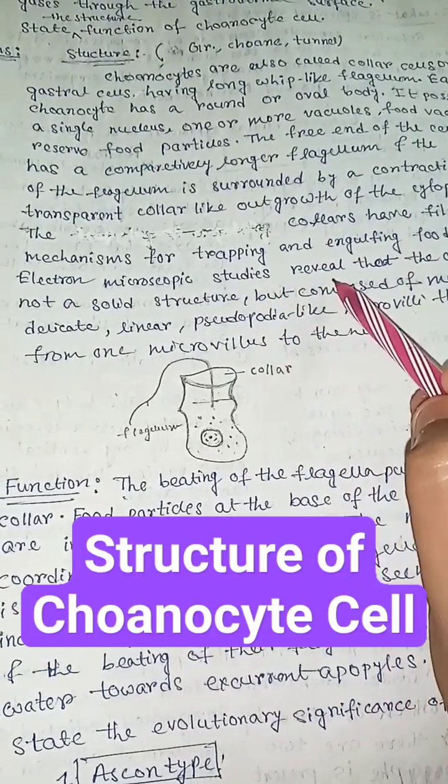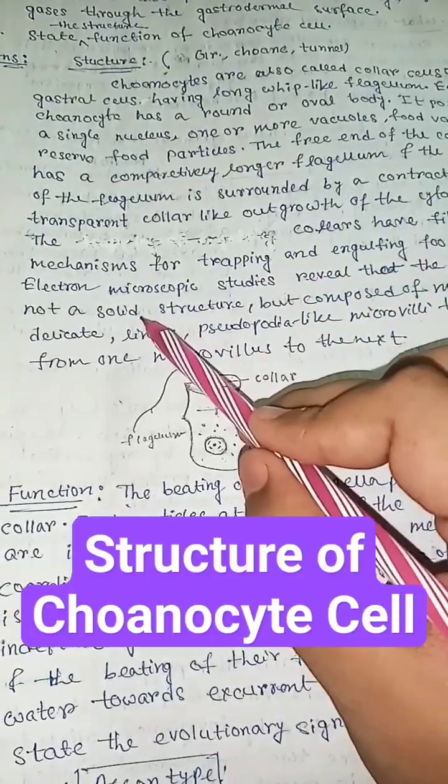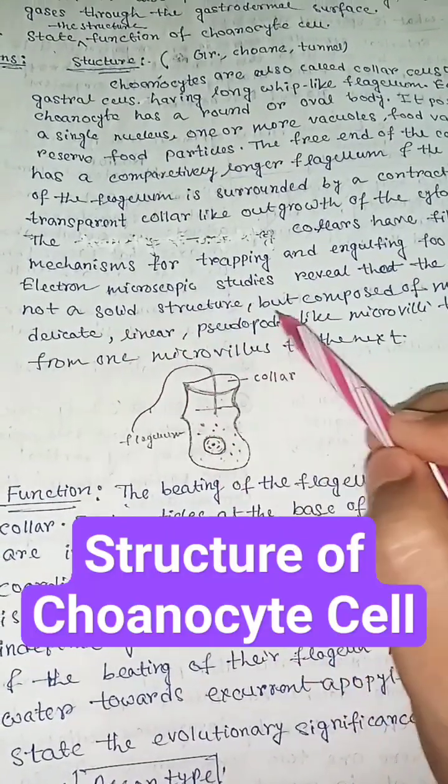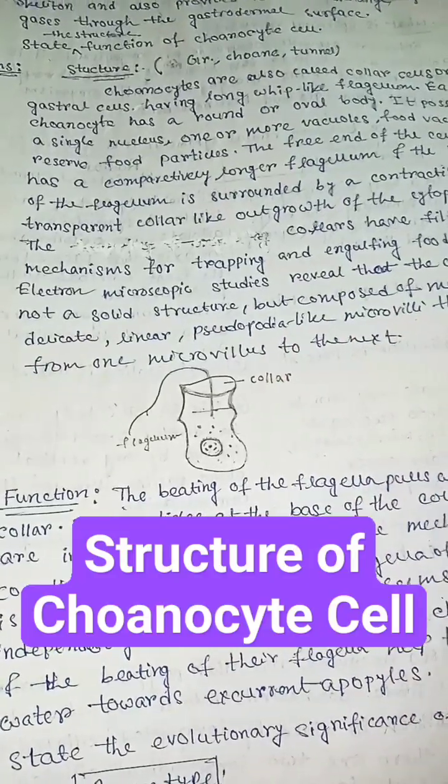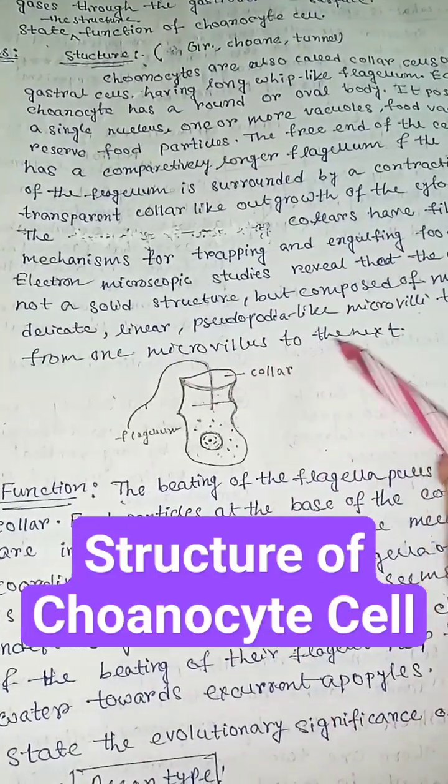Electron microscopic studies reveal that the collar is not a solid structure, but composed of many delicate linear pseudopodial-like microvilli that pass from one microvillus to the next.